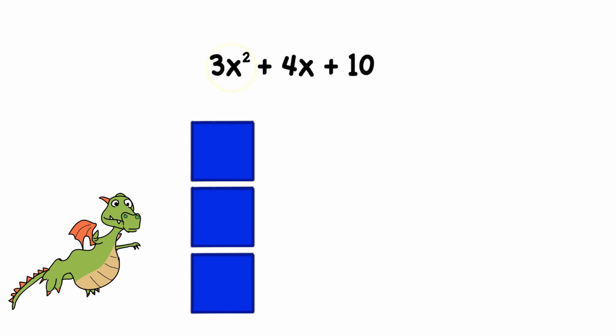Alright, now we are getting somewhere. What about 4x? Can we interpret this as area as well? The easiest shape that has the area of x is a 1 by x rectangle like this. So 4x would look like this.